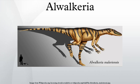Orwakiria is a genus of basal saurian dinosaur from the late Triassic of India. It was a small bipedal omnivore. This dinosaur was originally named Wakiria malerensis by Sankar Chatterjee in 1987, in honor of famous British paleontologist Alec Walker.